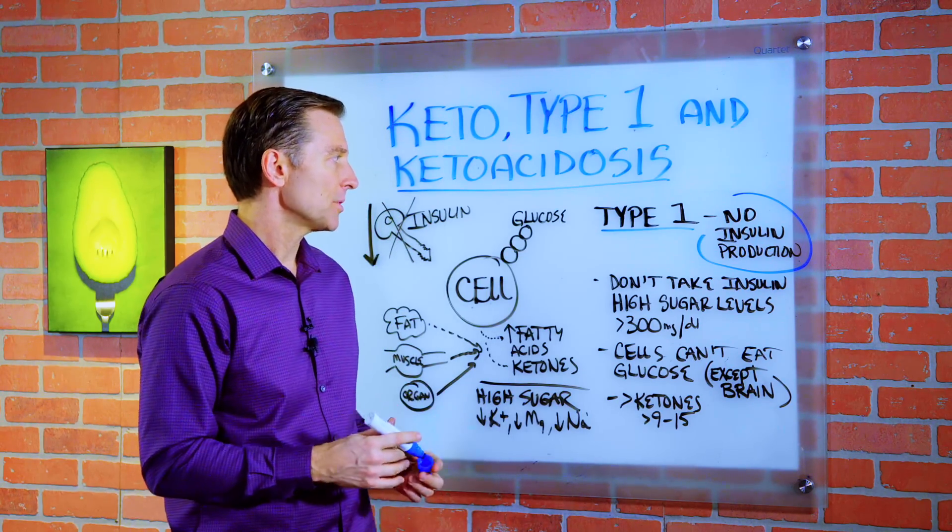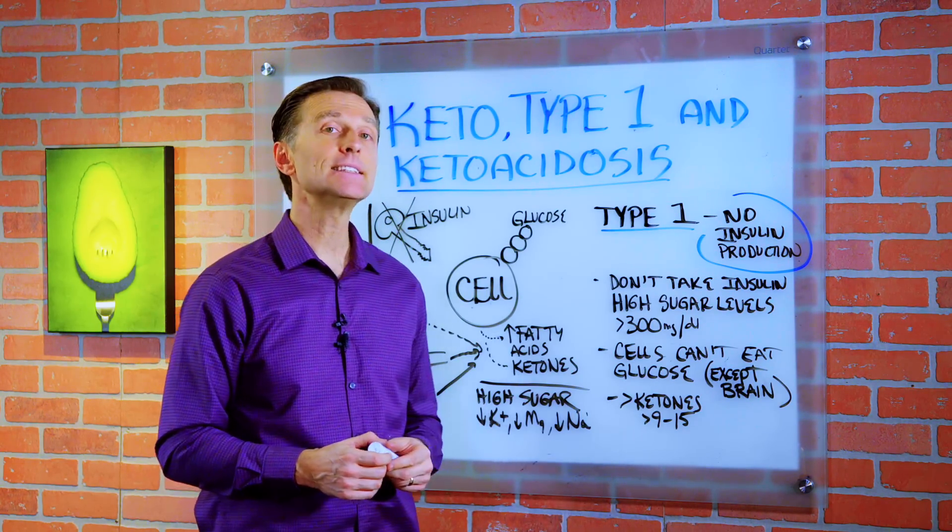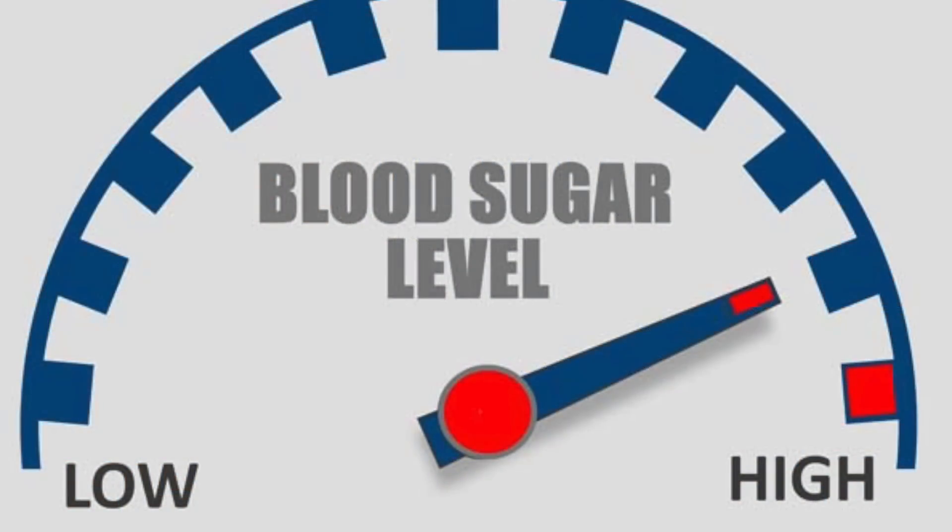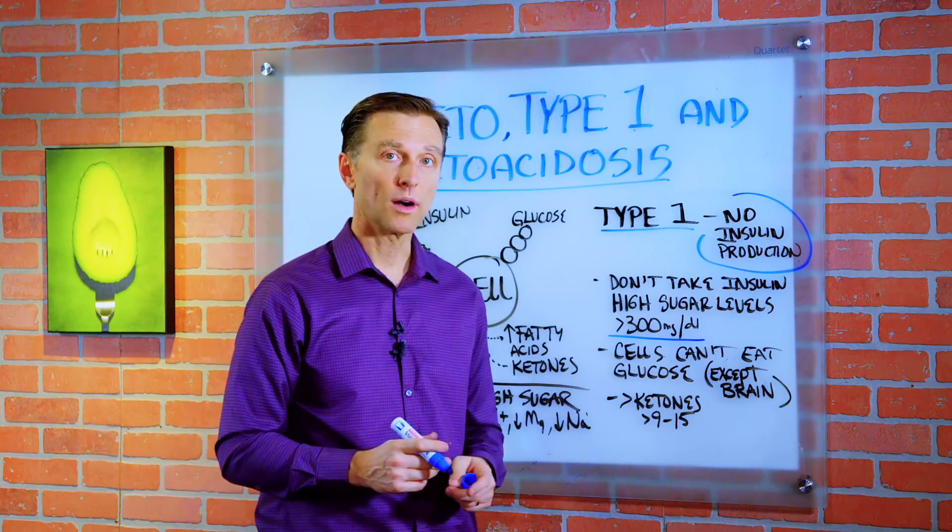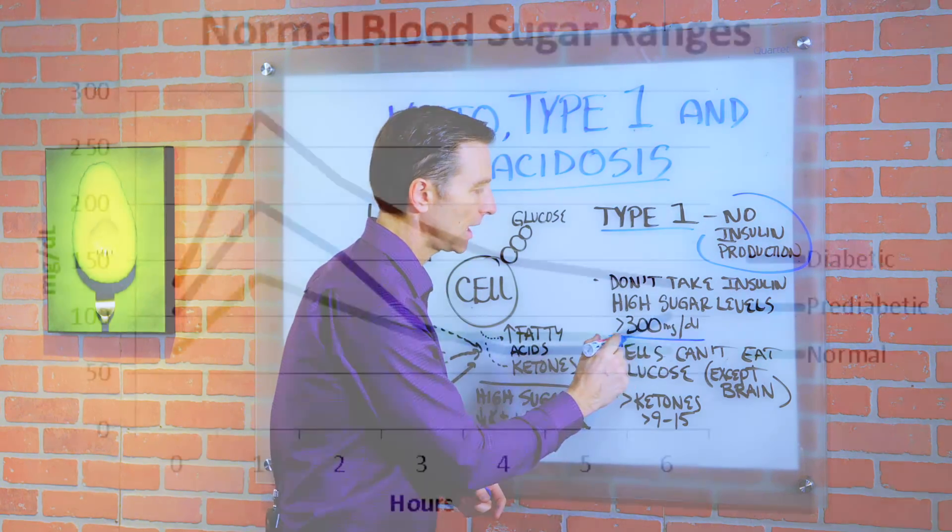Now, let's say, for example, you're a type 1 and you forget to take your insulin. Your blood sugars will rise. So let's say, for example, they get up to 300 or more milligrams per deciliter. That's pretty high.